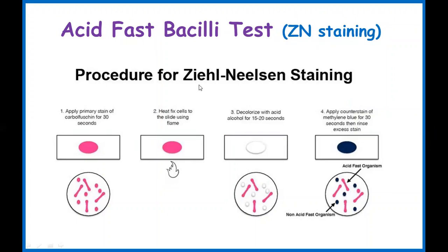The Ziehl-Neelsen stain is named after the two people who first described it: Ziehl and Neelsen. It is called acid-fast because once the bacteria is stained by the primary stain — carbol fuchsin, which is pinkish — it cannot be decolorized by acid or alcohol. Therefore, the bacteria does not take up the counter stain, and the pink primary stain is what remains visible at the end.